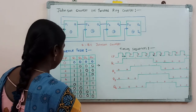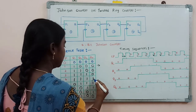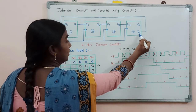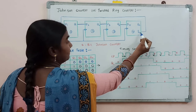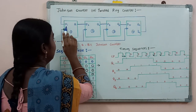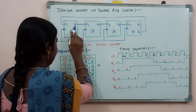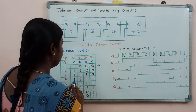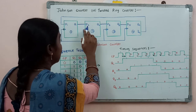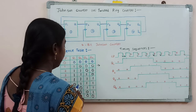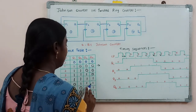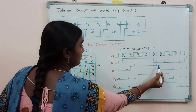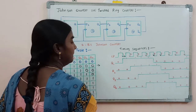Now after applying the fifth clock pulse, Q4 is 1 before the fifth clock pulse, so Q4 complement is going to be 0. This 0 is fed back to the first flip-flop input, so D1 is 0 and Q1 will be 0. The previous Q1 of 1 is given to the second flip-flop input, so Q2 will be 1, Q3 will be 1, and Q4 will be 1. After the fifth clock pulse: Q1 is 0, Q2 is 1, Q3 is 1, Q4 is 1.